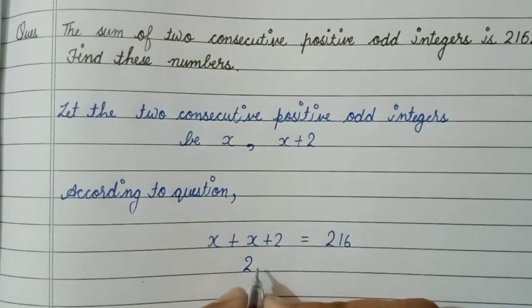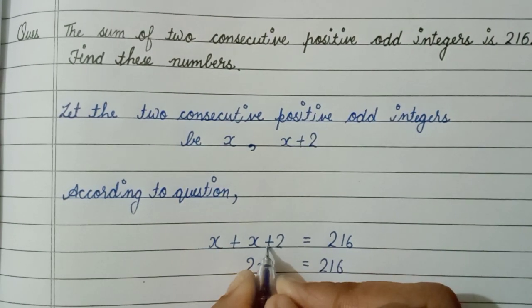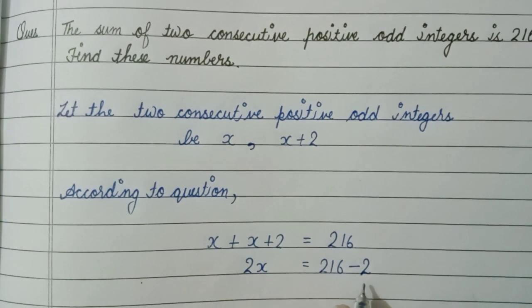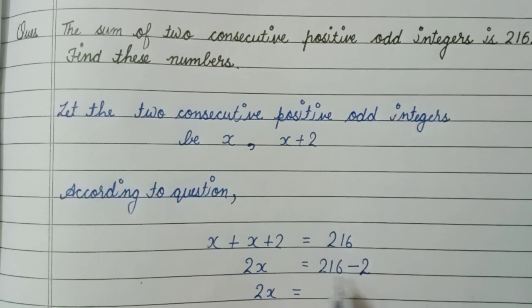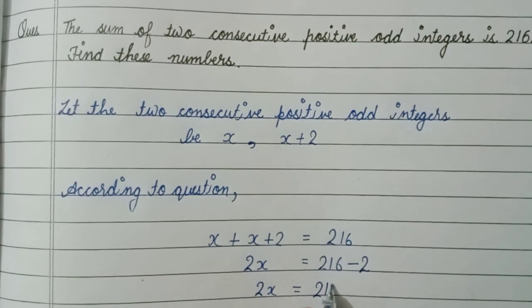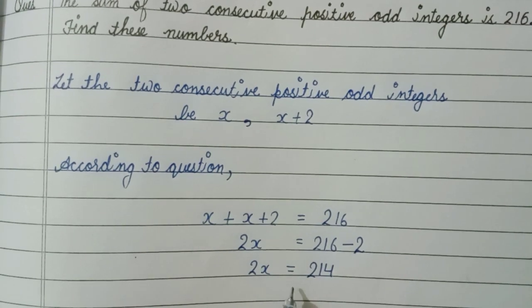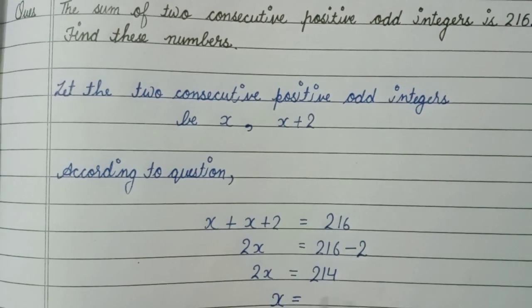We get 2x equals 216 minus 2. So 2x equals 214. Now divide this by 2. We get the value of x which is equals to 107.